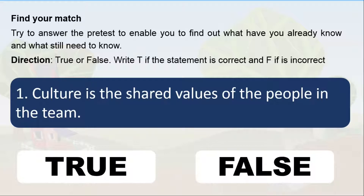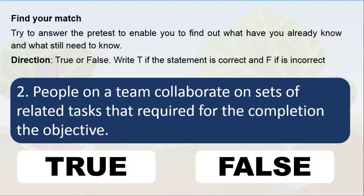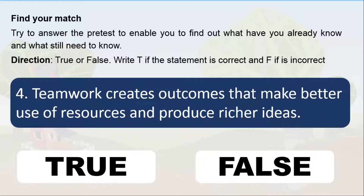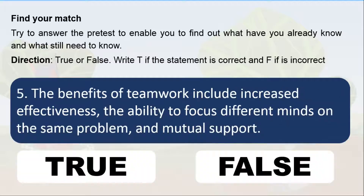First: Culture is the shared values of the people in a team — this is true. Next: People in a team collaborate on sets of related tasks required for the completion of the objective — also true. Third: The primary role of a team is to pool resources, competencies, skills, and bandwidth to achieve organizational objectives — true. Fourth: Teamwork creates outcomes that make better use of resources and produce richer ideas — true. Last: The benefits of teamwork include increased effectiveness, the ability to focus different minds on the same problem, and mutual support — also true.